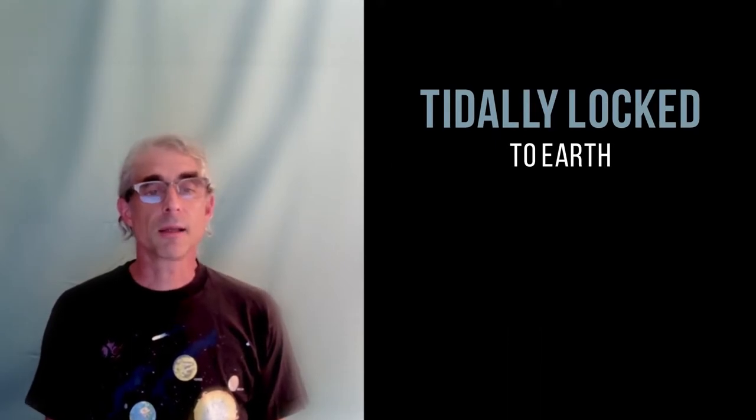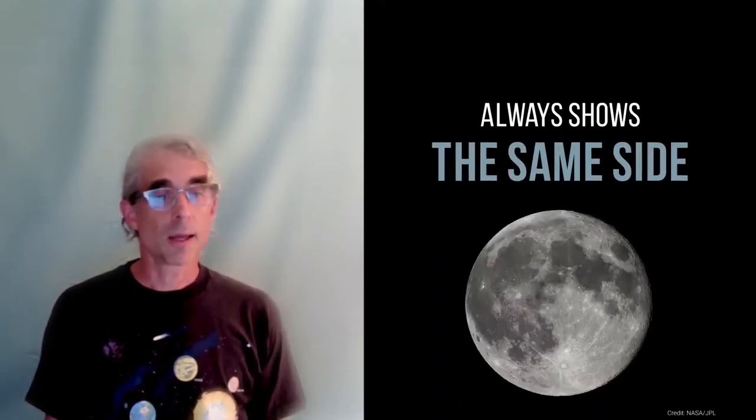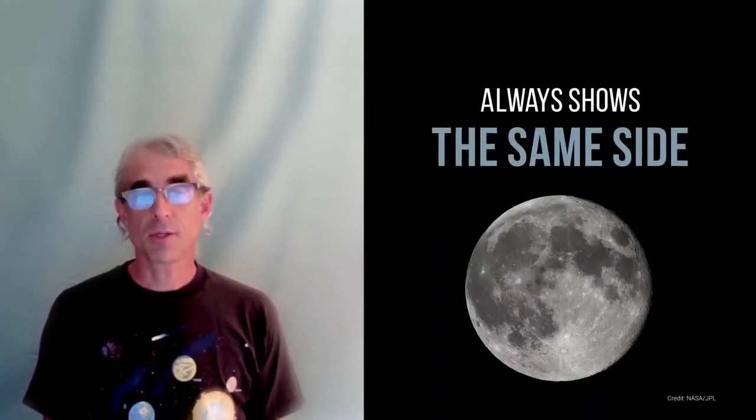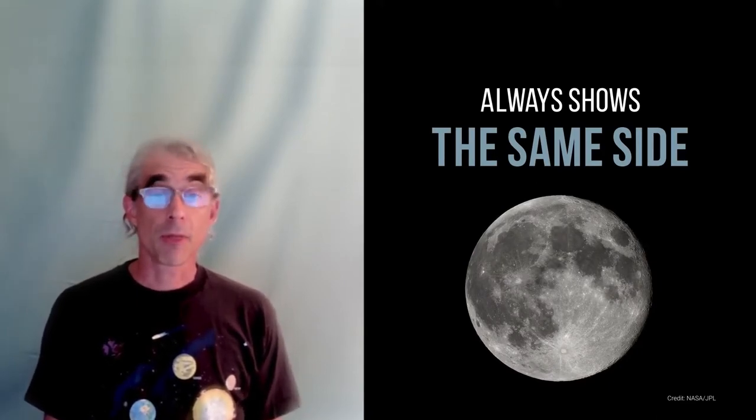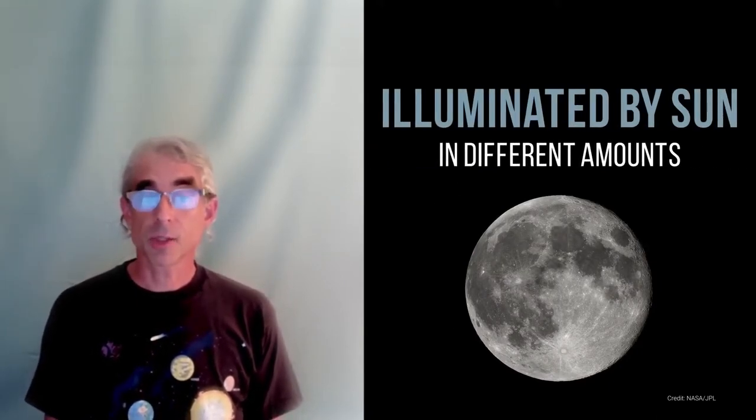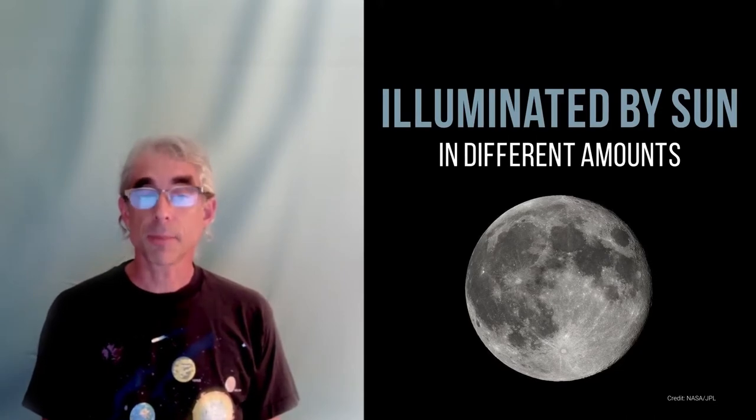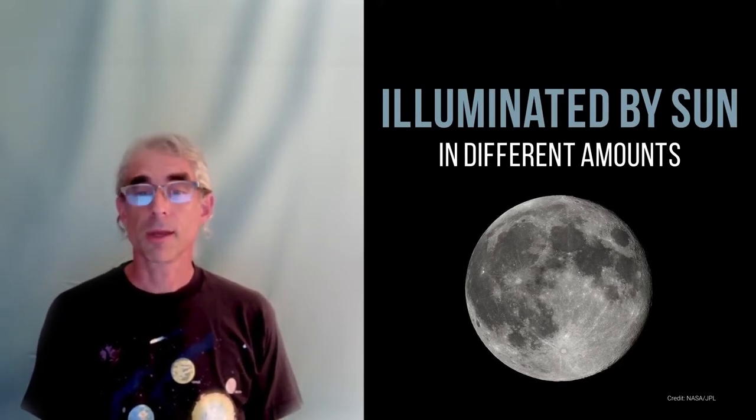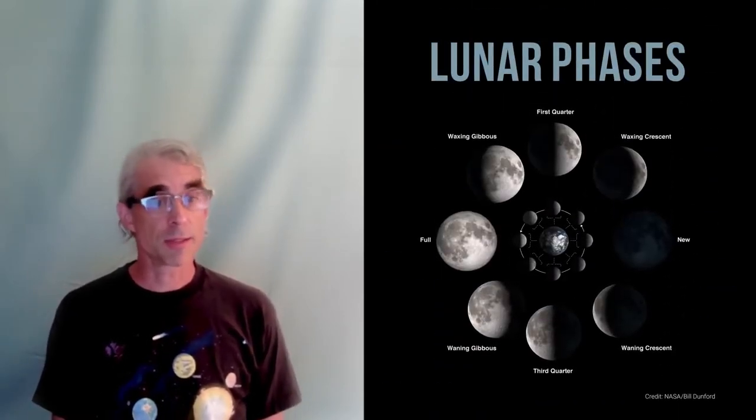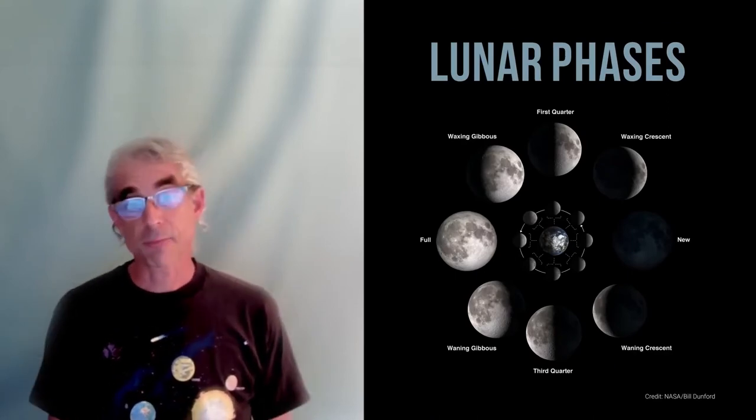The moon is tidally locked to the Earth, which means that it always shows the same side to us as it orbits around the Earth, though that Earth-facing side gets illuminated by the Sun in different amounts throughout the lunar month, which is how we see its different phases, such as crescent, half moon, and full moon.